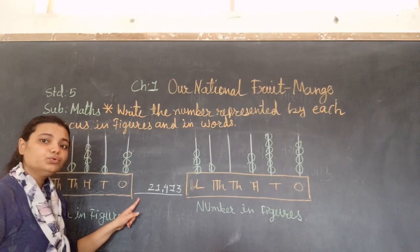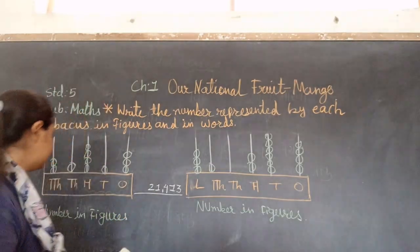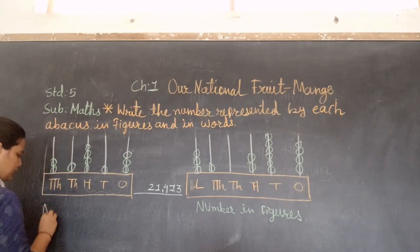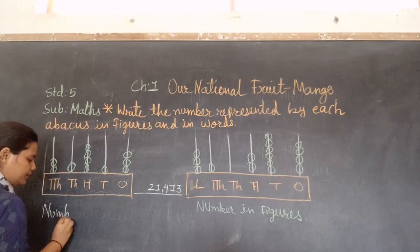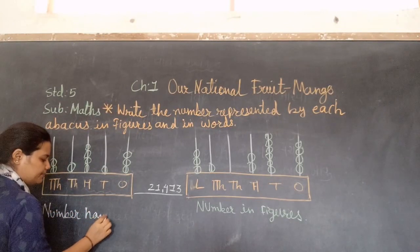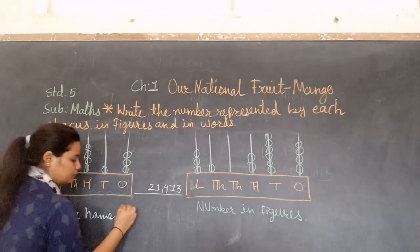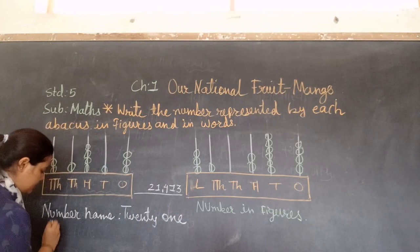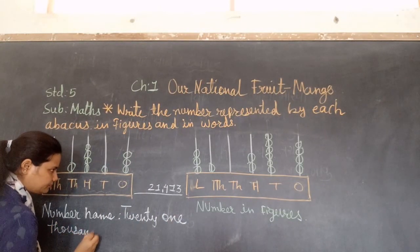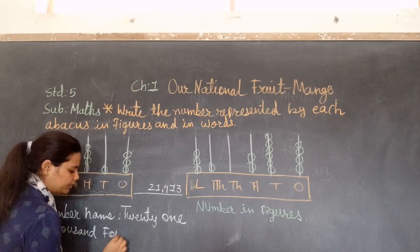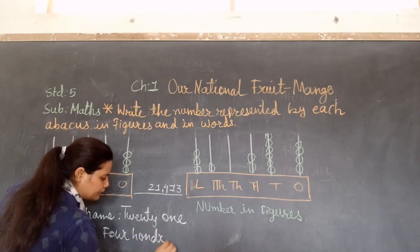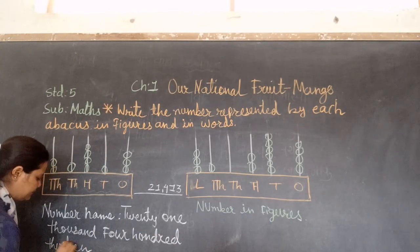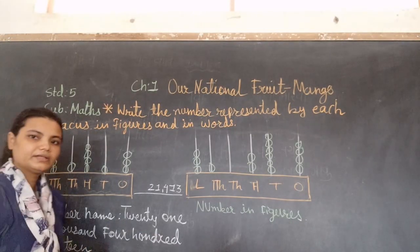Ten thousand — writing the number name. So the number name is: twenty-one thousand four hundred thirty. Clear?